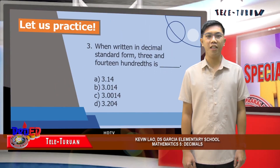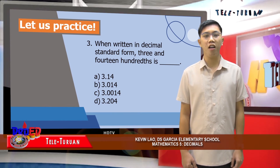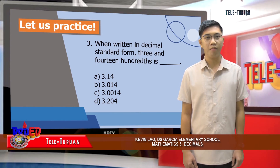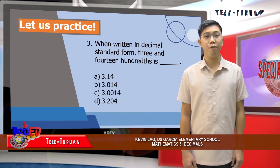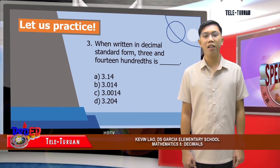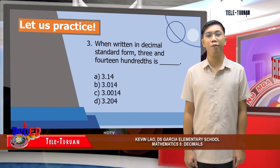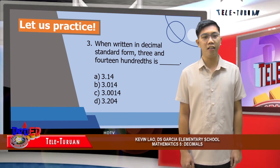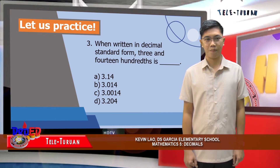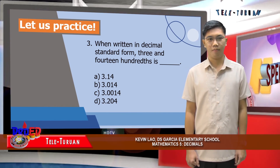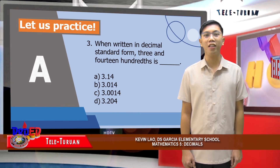Number three: when written in decimal standard form, three and fourteen-hundredths is blank. The choices are A, 3.14; B, three and fourteen-thousandths; C, three and fourteen-ten-thousandths; or D, three and two hundred four-thousandths. The correct answer is A, three and fourteen-hundredths.